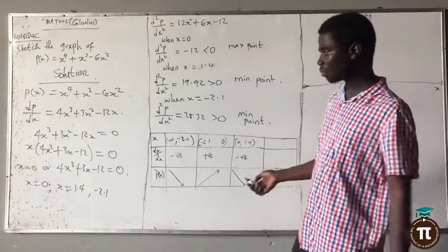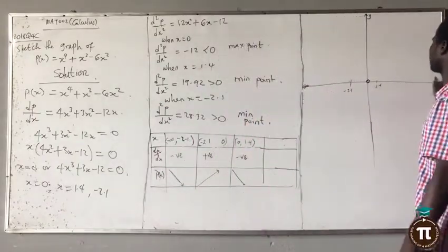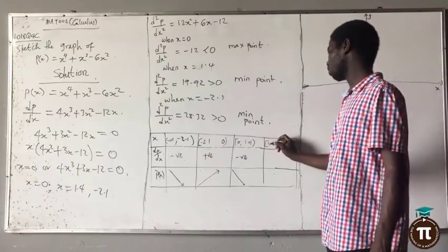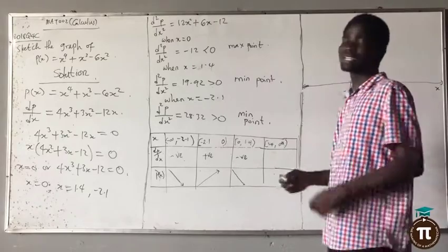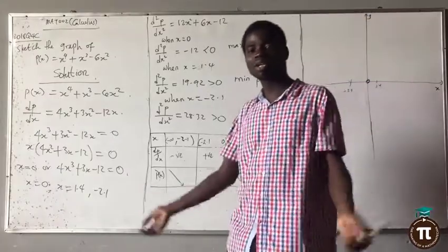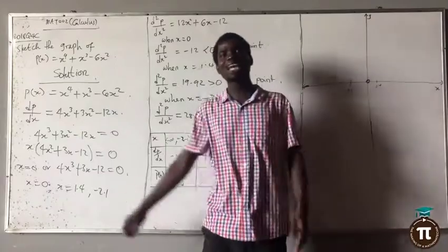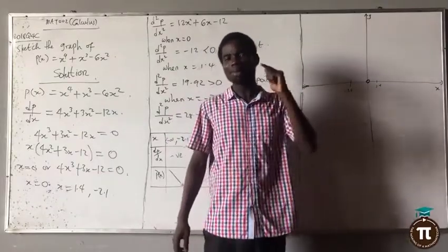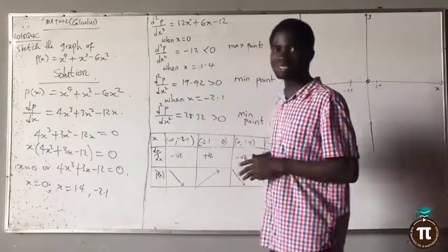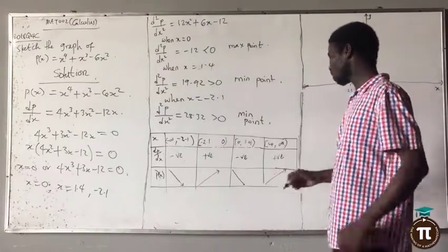After 1.4 there are no more stationary points, so we go from 1.4 to infinity. Pick any value, say 100 or 200, and put it into the derivative — the answer is positive. A positive derivative means the function is increasing from 1.4 to infinity.